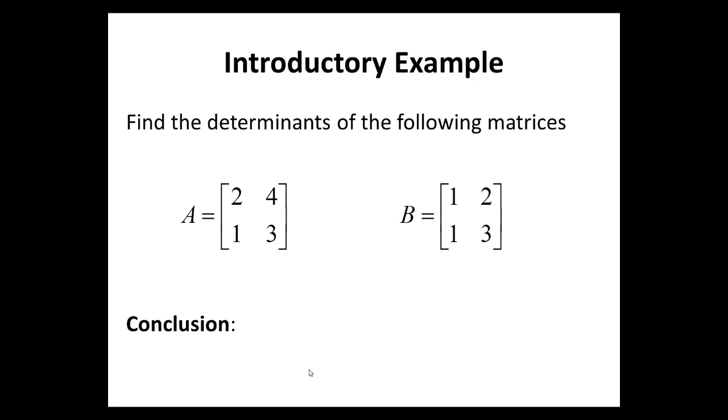Introductory Example 3. Find the determinants of the following matrices A and B. Observe that we have also performed an elementary operation on A to get B. We have multiplied row 1 by 1 half: 1, 2, 1, 3. Does that affect the determinants of A and B? And what possible conclusion can we draw from the results?